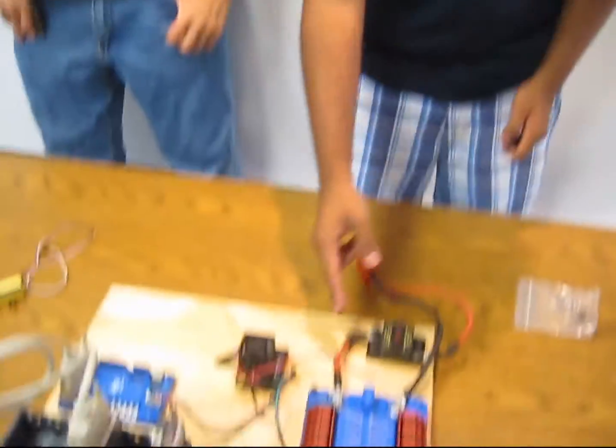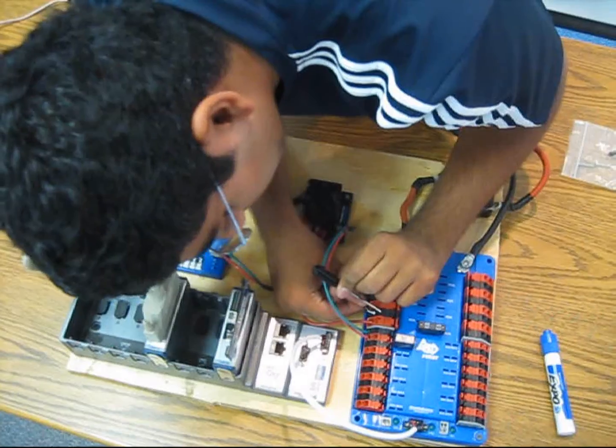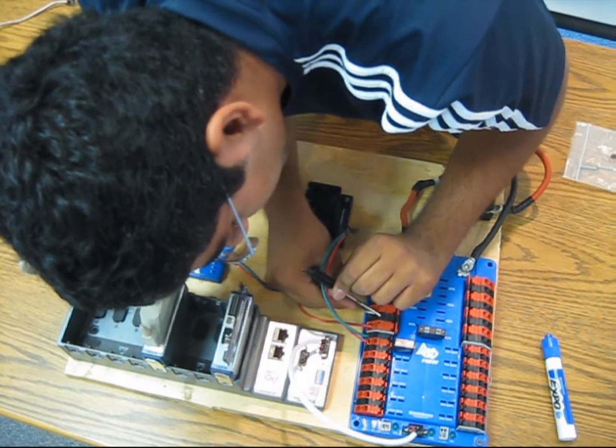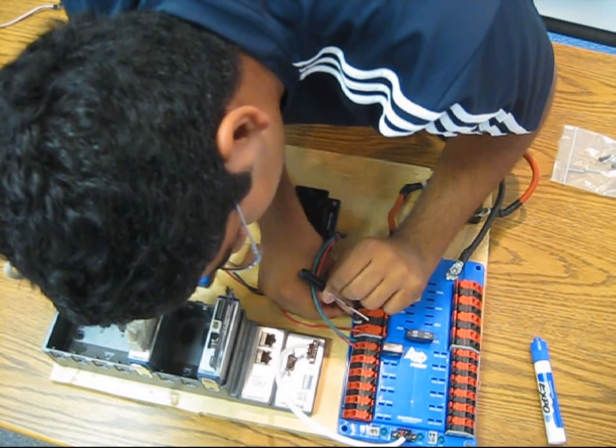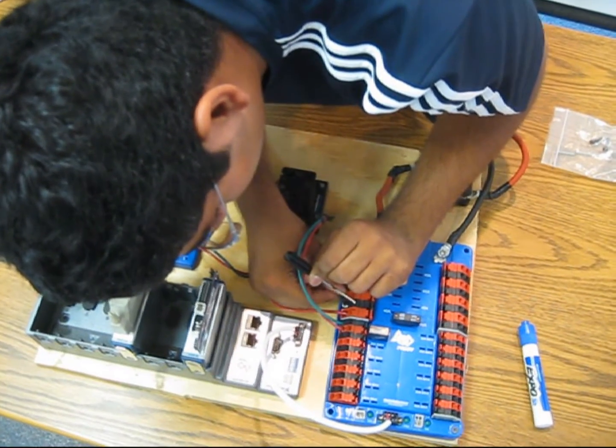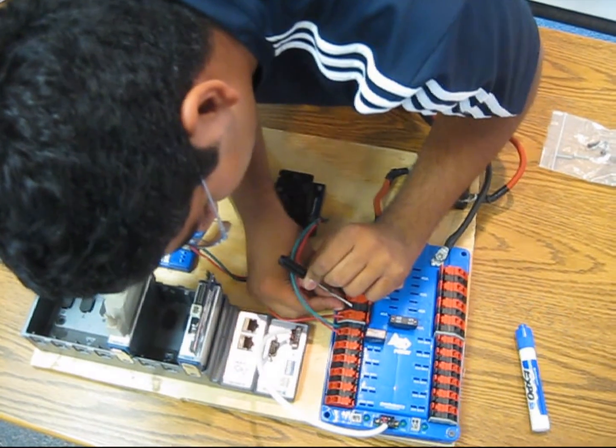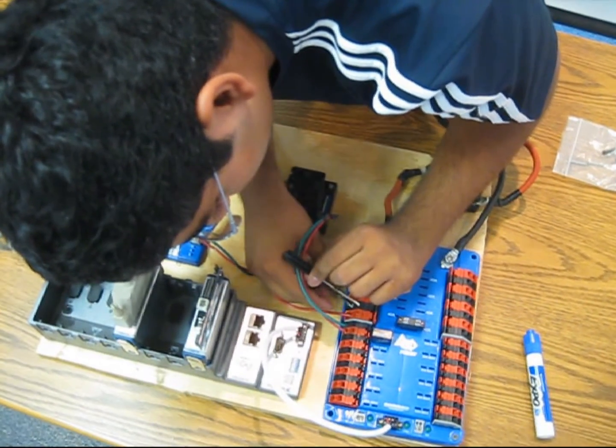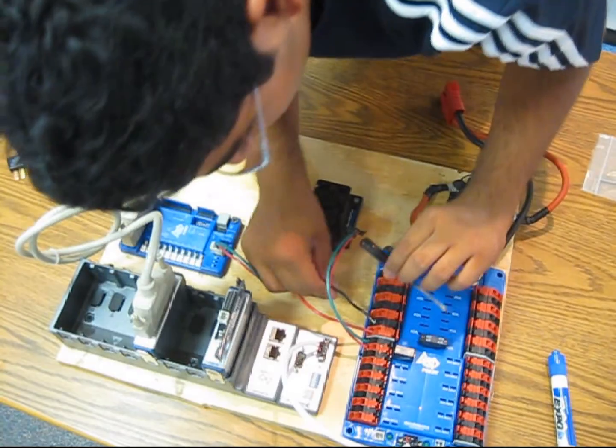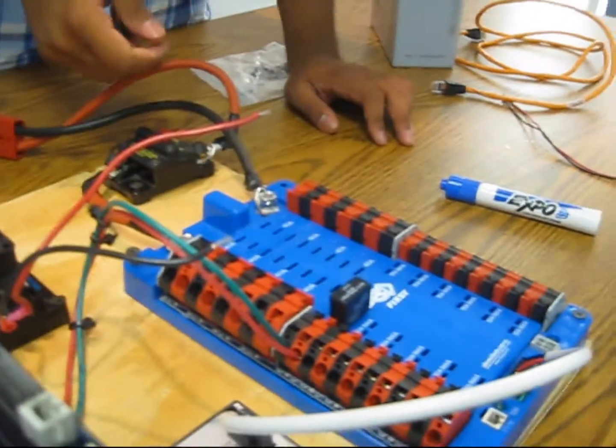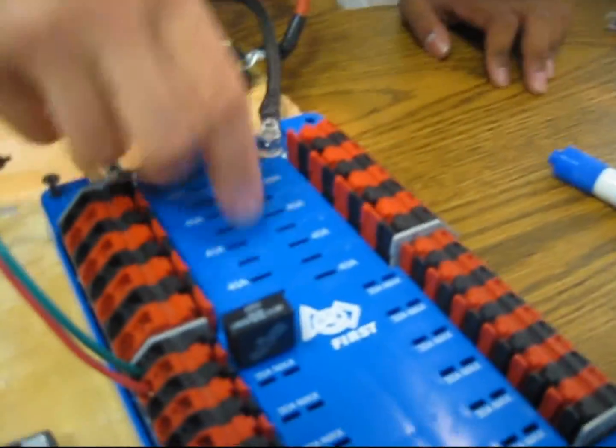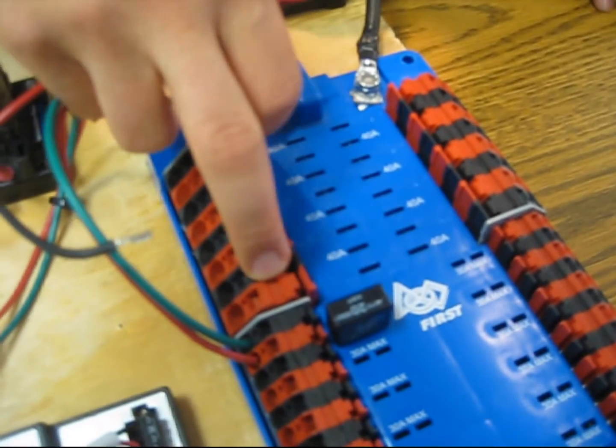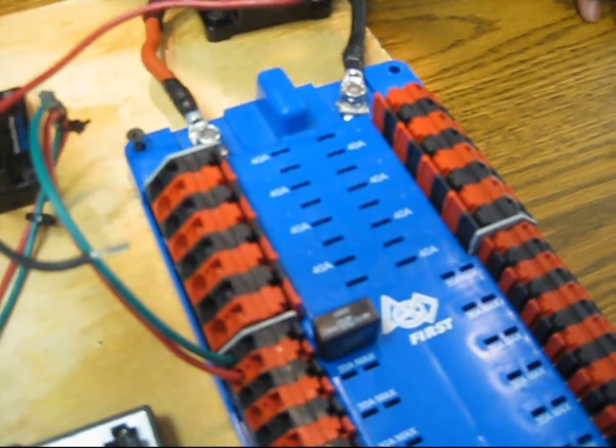Our next step, we're going to connect the victor to the power distribution board. To do this, you must connect the appropriate connectors on the power distribution board with the wires on the victor. Also, you must apply a 40 amp fuse to the correct connectors. You'll know the connector is correct because the fuse holes will have a lightning rod going to the connectors that they fuse.